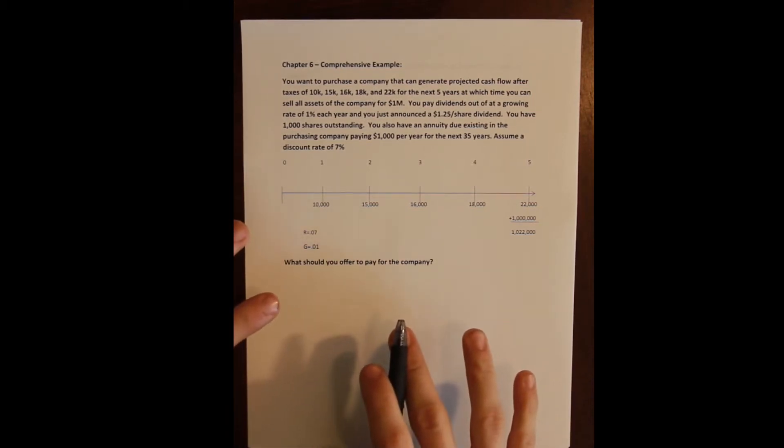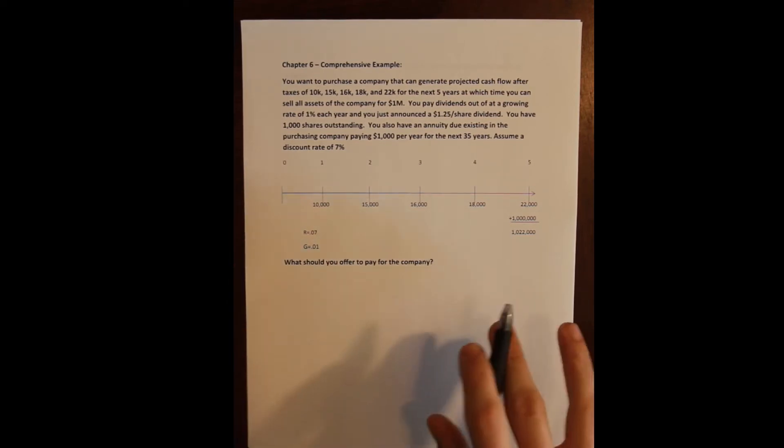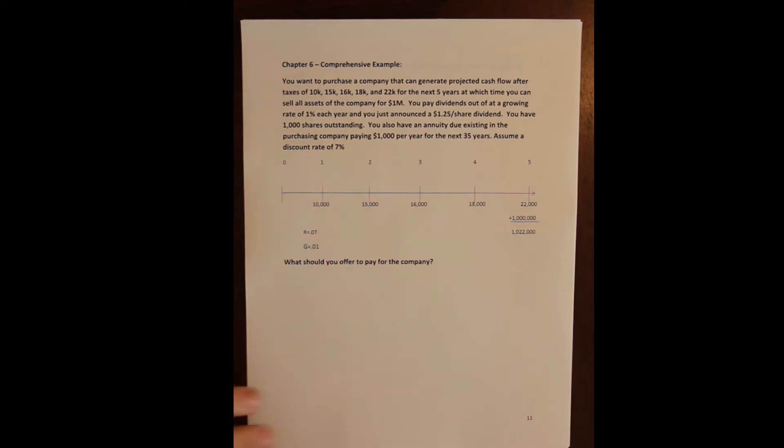So we're gonna look at a comprehensive example. We're gonna do sort of one example of all the different things that we've learned. We'll value an annuity, we'll value a perpetuity, we'll do different kinds of annuities and then we'll add it all together and we'll say this is the value of a company. So let's say that we are a company, we run a company, and we want to purchase another company. And this other company that we want to buy is gonna generate projected revenue or profit cash flow after taxes of $10,000, $15,000, $16,000, $18,000, $22,000 over the next five years.